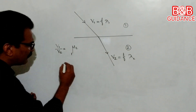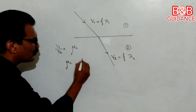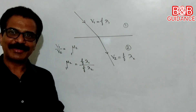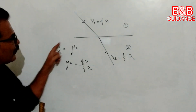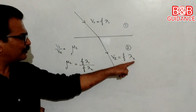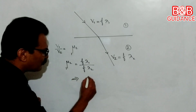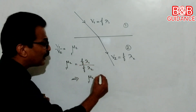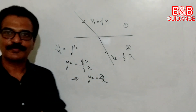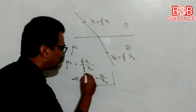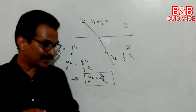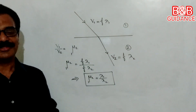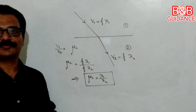Now, this refractive index of the second medium with respect to the first medium can also be written as F·λ1 divided by F·λ2. Since frequency F cancels out, this gives us λ1 by λ2. So refractive index equals V1/V2 equals λ1/λ2. Please remember this relation.